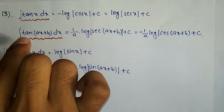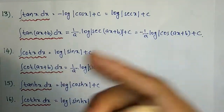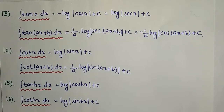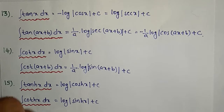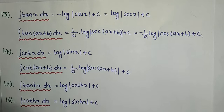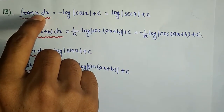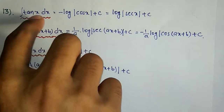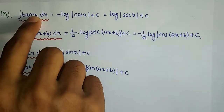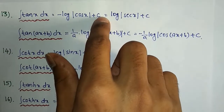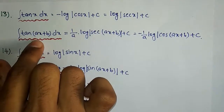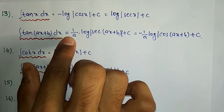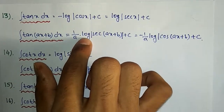Integration of tan(ax+b) dx: the inner derivation of (ax+b) is a, so we divide by a and place 1/a in the denominator. The result is 1/a · log|sec(ax+b)| plus C.